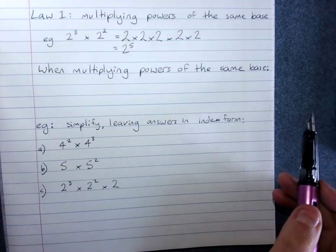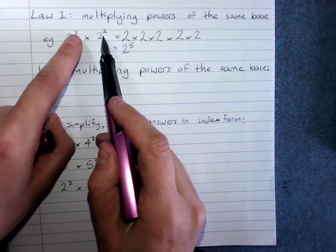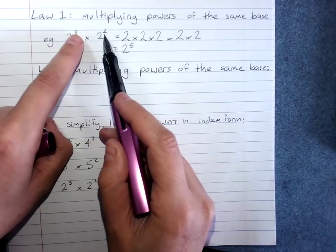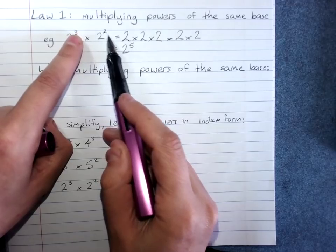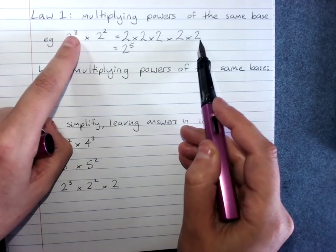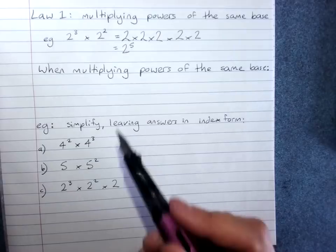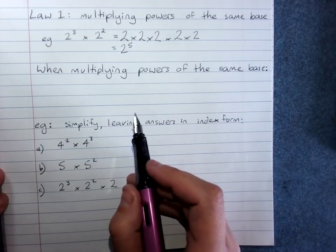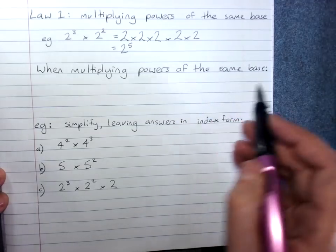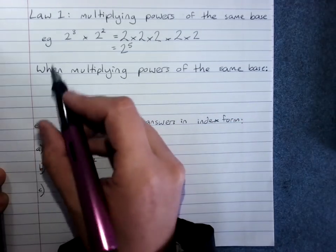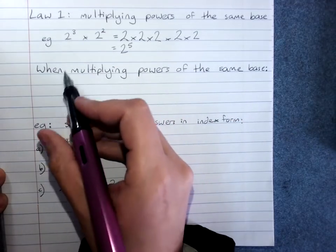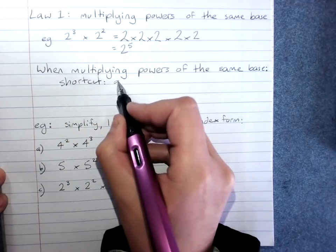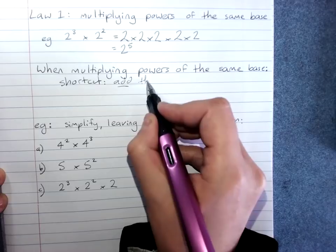If you checked it with a couple of others, we'd get the same pattern: when multiplying powers of the same base, there's a shortcut. Instead of writing it out in expanded form, I can just add the indices. So when multiplying powers of the same base — index law 1 — the shortcut is: add the indices.